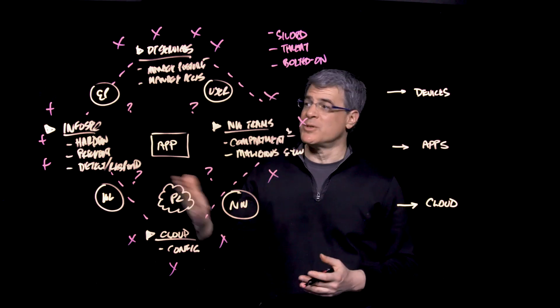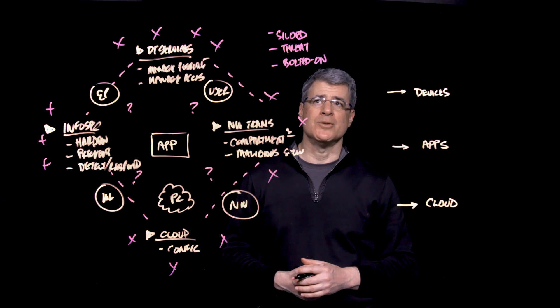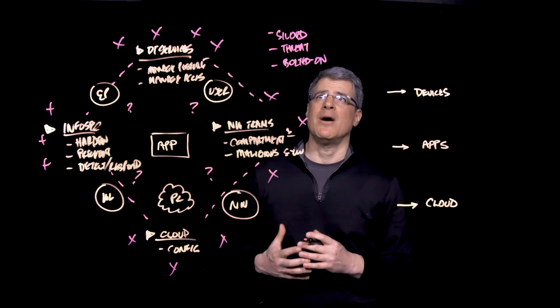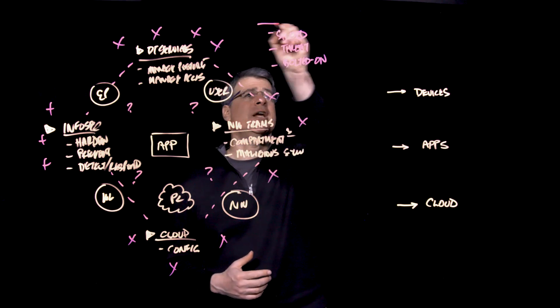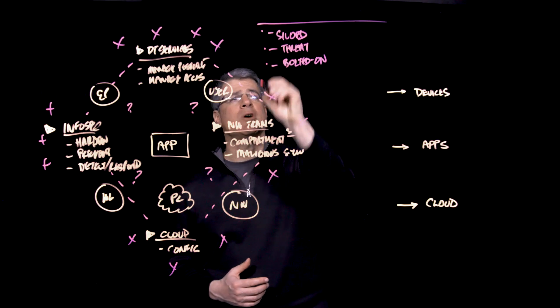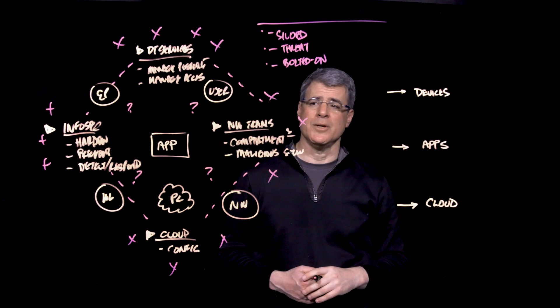And the misconfiguration and misalignment of these controls is contributing to a huge part of the problem. Over 90% of breaches leverage misconfiguration and misalignment of these controls. Somehow, we really need to change the structure of the problem to really transform security.